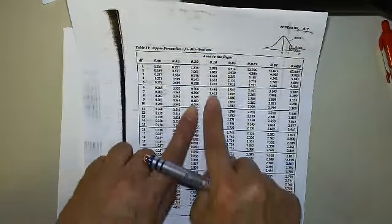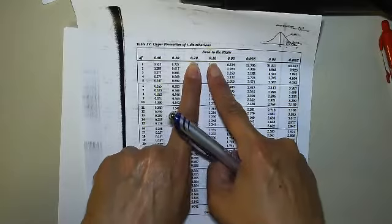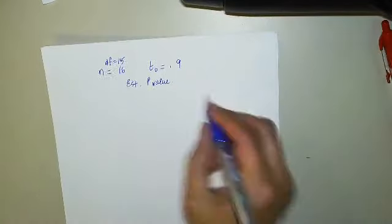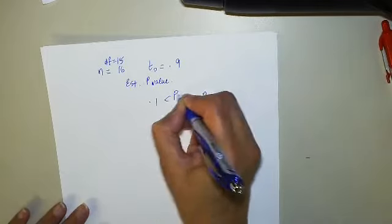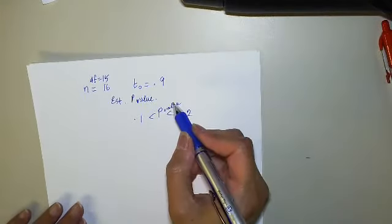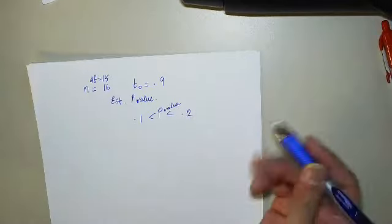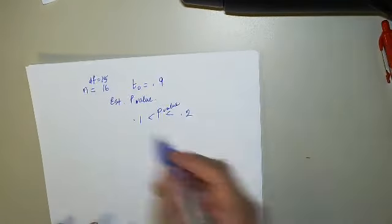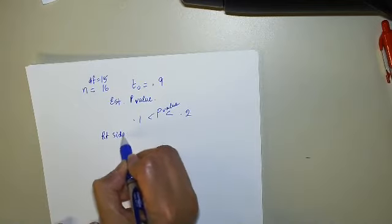So I'm going to go to my t-table. My t0 is 0.9, right? And degrees of freedom is 15, right? Yeah. So let's go to 15 degrees of freedom and let's hunt for 0.9. So 0.9 falls between here and here, and so I just go up here like that. So the p-value is between 0.1...